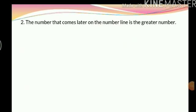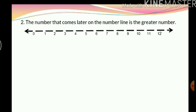Now we go to rule number 2. The number that comes later on the number line is the greater number. A number line is when we write the numbers one after the other on a line starting from the left-hand side. In this number line, I have started from 0 and as we go towards the right we increase the number one by one. So the number on the right-hand side is greater than the number to its left — like 2 is greater than 1, 3 is greater than 2, 7 is greater than 6, and so on.